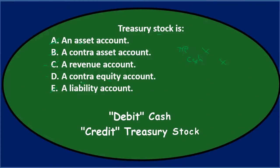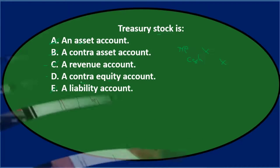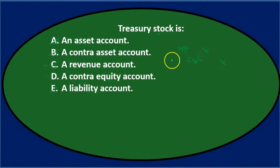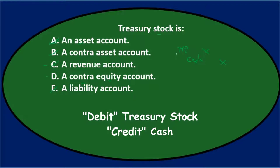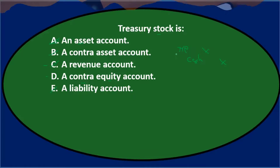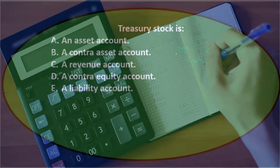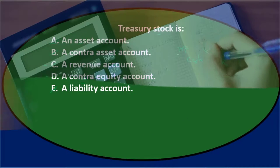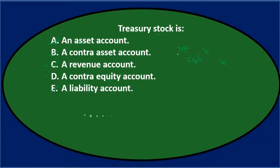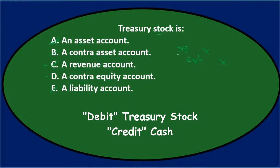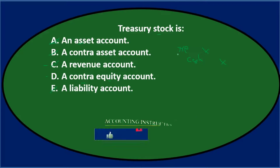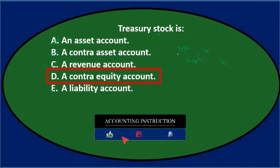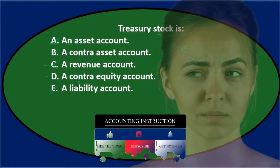Treasury stock represents buying back our own stock. When we originally issued stock, we debited cash and credited the stock and additional paid-in capital. When we buy our own stock back, we debit Treasury stock and credit cash. We put it on the books not as an asset but in the equity section. Normally equity accounts like retained earnings and common stock have credit balances, but Treasury stock has a debit balance because we bought back our own stock — making it contra to the normal equity accounts.